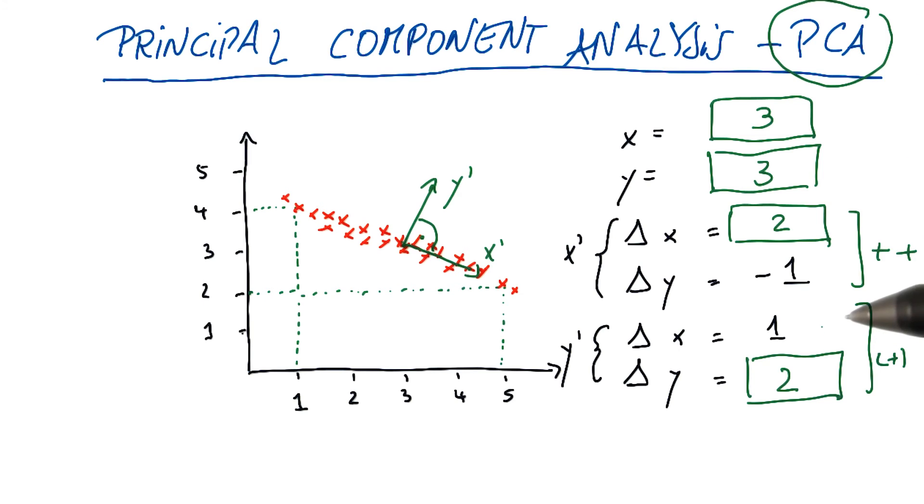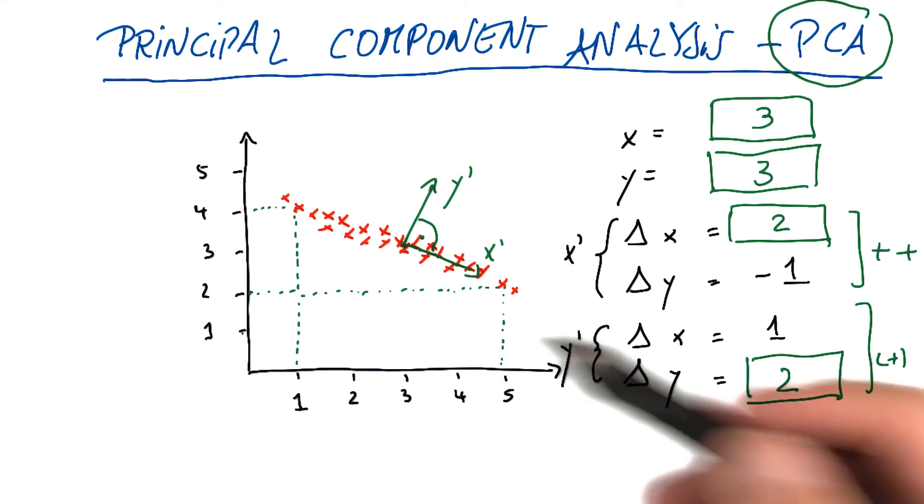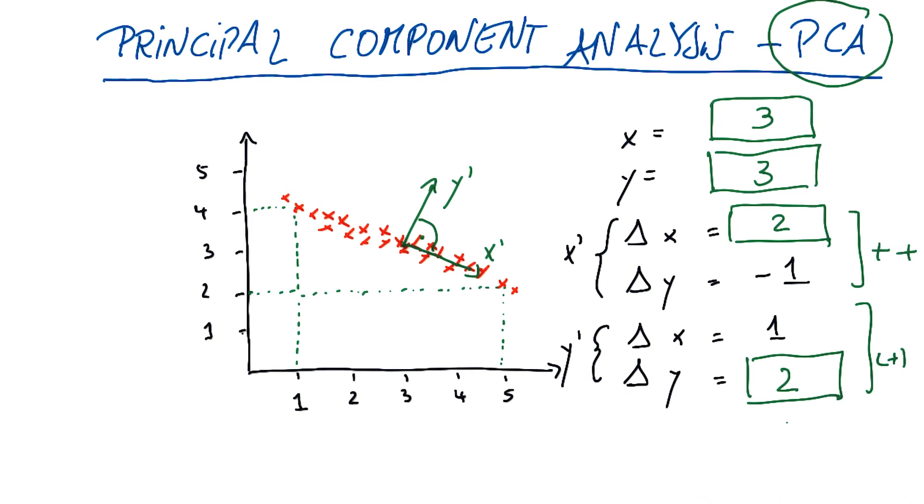But what it really gives you is an importance vector, how important to take each axis when you look at the data. So when you run the code, you'll find the new origin, you'll find these different vectors, and you'll find an importance value that's given to these vectors that really measures the amount of spread.